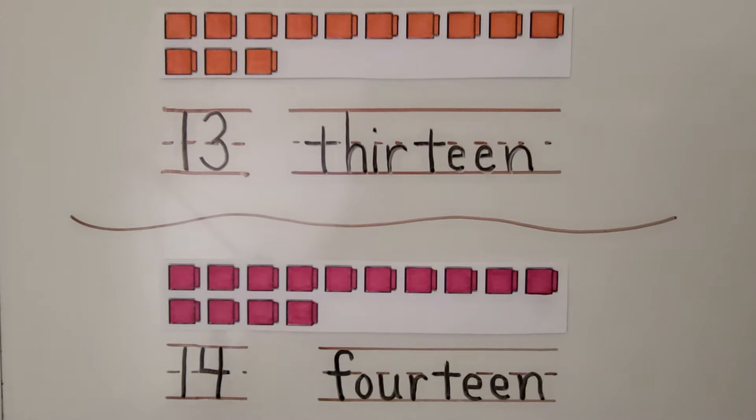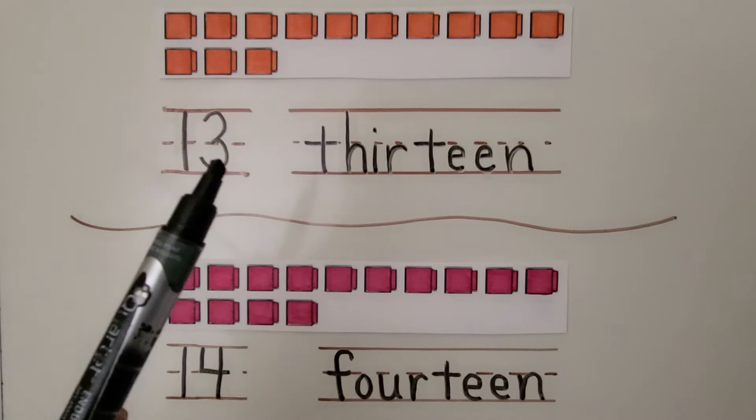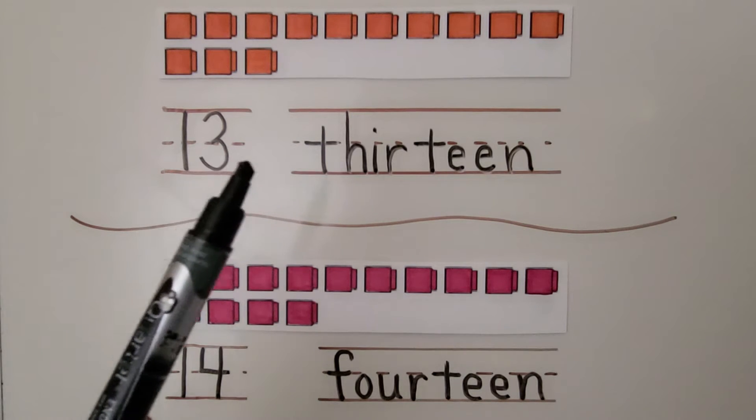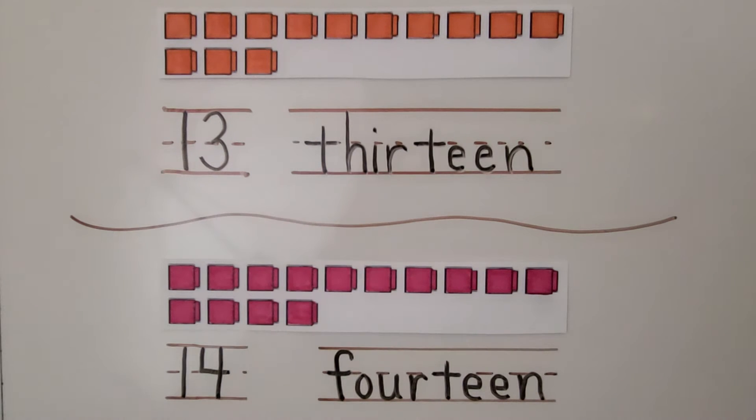The 13 is written as a 1 and a 3 next to each other. 13. There are 10 cubes in the top row here and there are 4 cubes in the bottom row. 10 cubes and 4 cubes is 14 cubes. Here's the number 14. Here's the word fourteen.